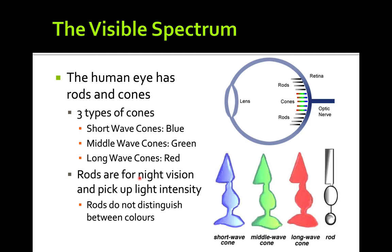Now we'll talk about the visible spectrum — what the human eye can see. Light enters through the lens into our eye, and at the back of our eye we have sensory sensors. There are two types: rods and cones. The cones come in three types — blue cones sense short wavelengths, green cones sense medium wavelengths, and red cones sense long wavelengths.